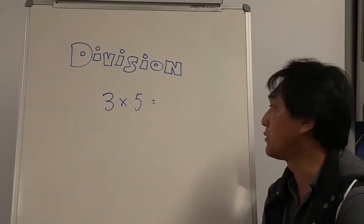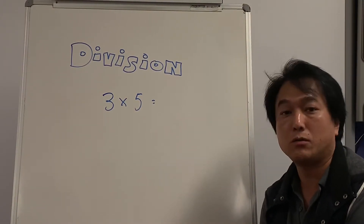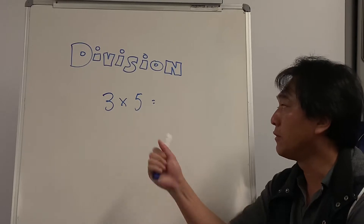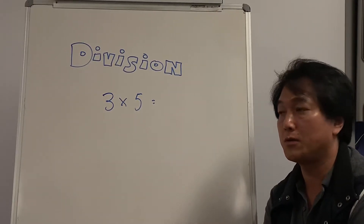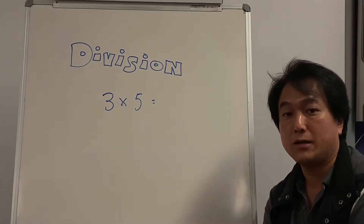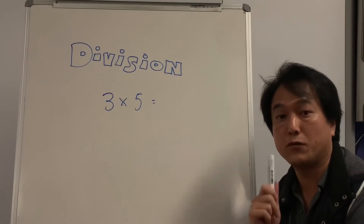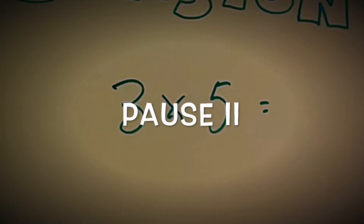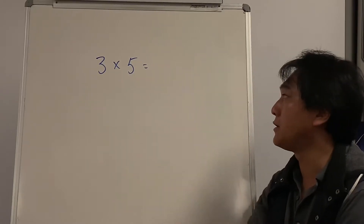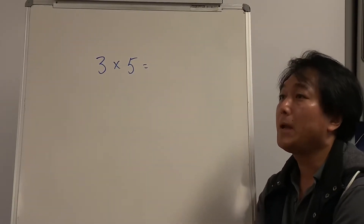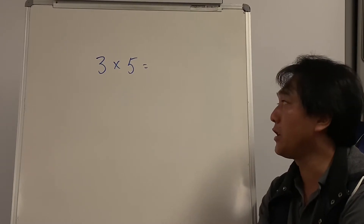3 times 5 equals — what does this look like? Can you draw this using dots? You can use apples, you can use pencils. Let's see if you can draw 3 times 5 on the piece of paper. Let's pause the video. So first thing you need to understand is 3 times 5 means in the language of English — that's 3 lots of 5.